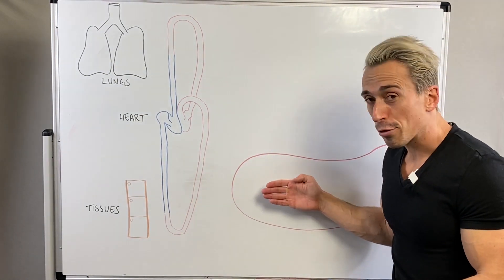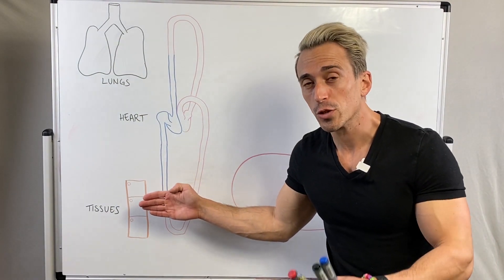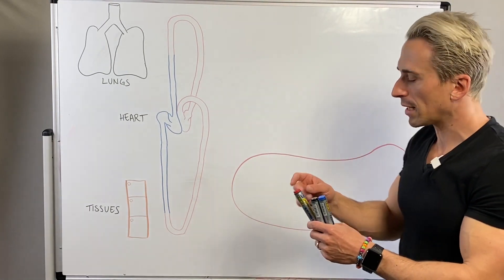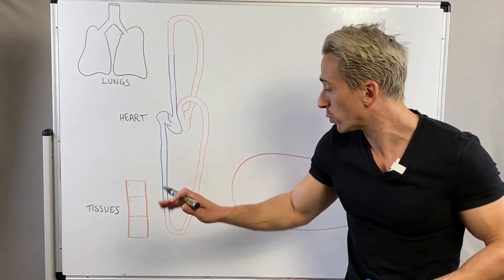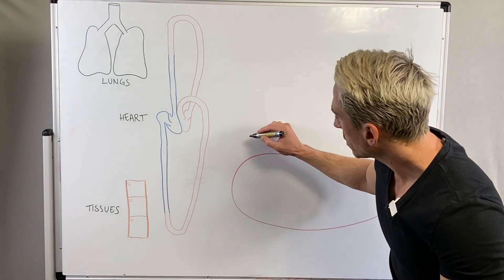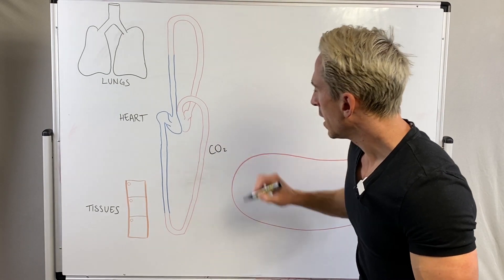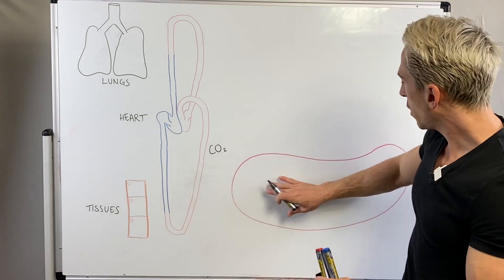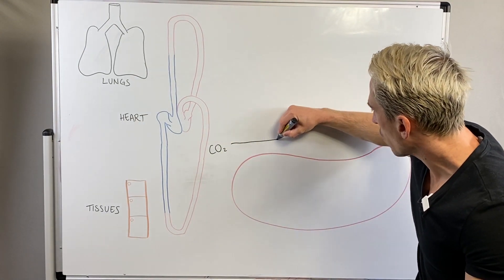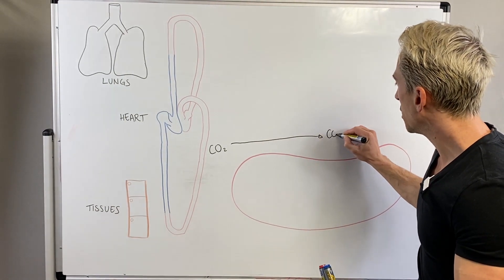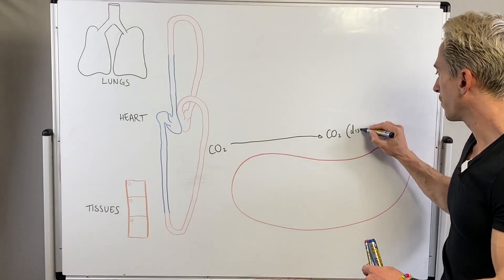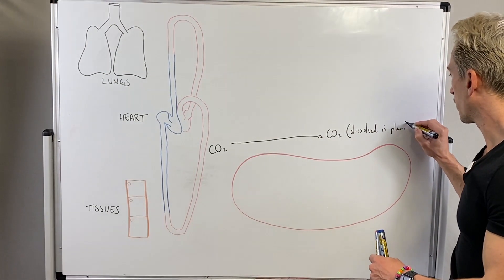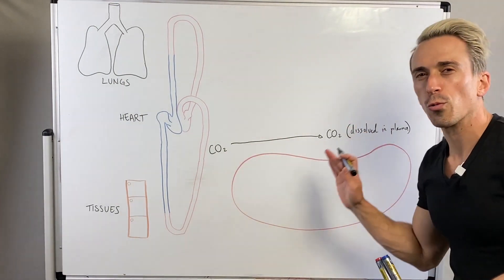At the tissues, we want to throw oxygen from the blood to the tissues and we want to pick up carbon dioxide from the tissues and put it into the blood. Starting with carbon dioxide: first, it can simply be transported in the blood plasma itself — not even with the red blood cell. That carbon dioxide can go straight into the plasma and just be dissolved directly in the plasma.